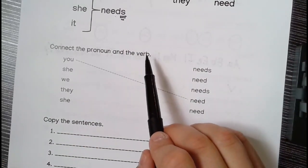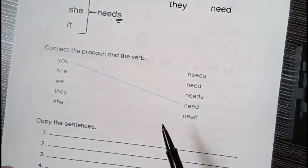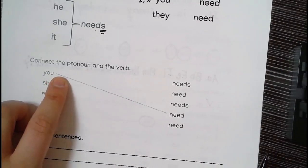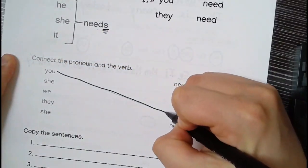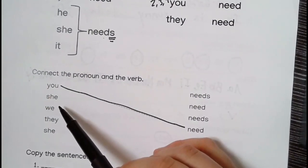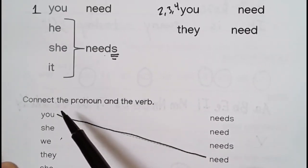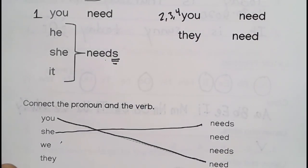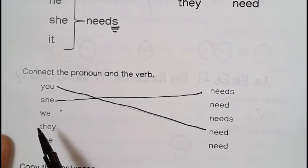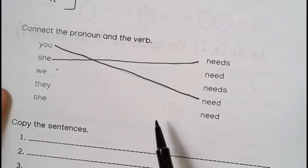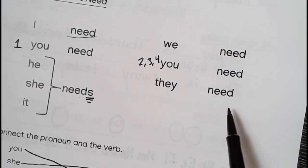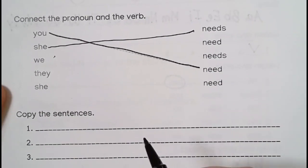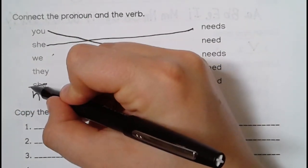Connect the pronoun and the verb. This side has the pronouns — I, you, he, she — and this side has the verb. So 'you' connects to 'need.' Next we have 'she' — she needs. You can do any of them; it doesn't really matter. They draw the line. Oh, I have two 'she's. Teacher Mary, let's make this one 'he.' It's not a very good H but here we go — bellissima!